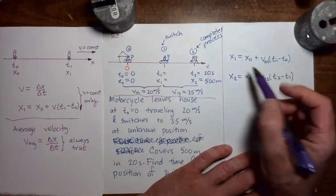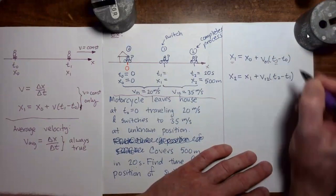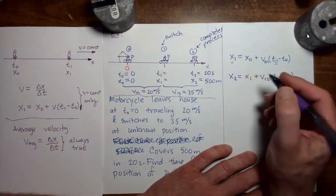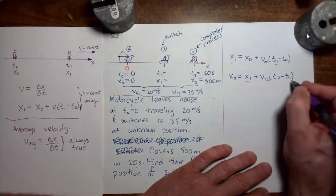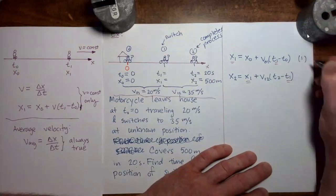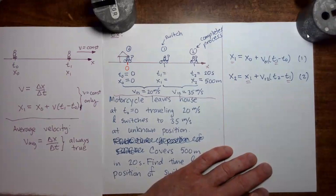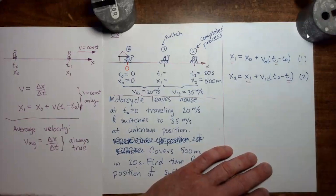Looking at equation one, our unknowns are x1 and t1. Looking at equation two, our unknowns are also x1 and t1. So we have two equations and two unknowns. When we solve with two unknowns and two equations, we like to solve for one variable in the simpler equation and then substitute into the more complicated equation.